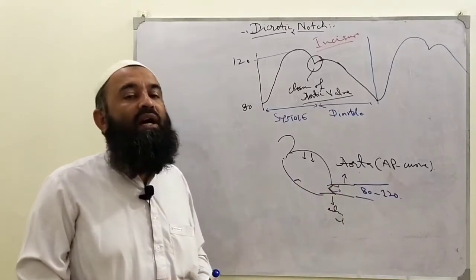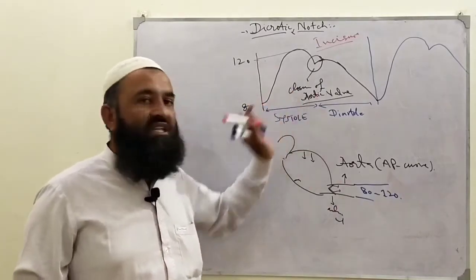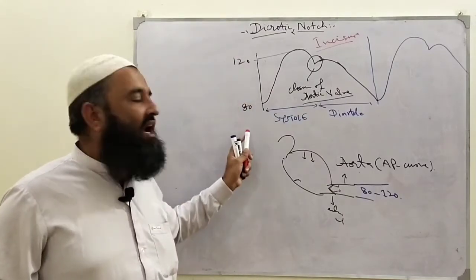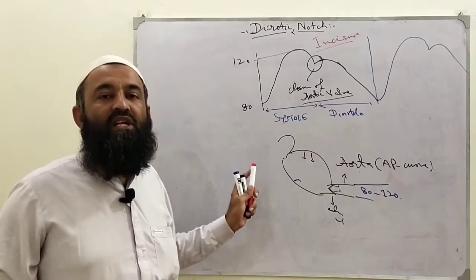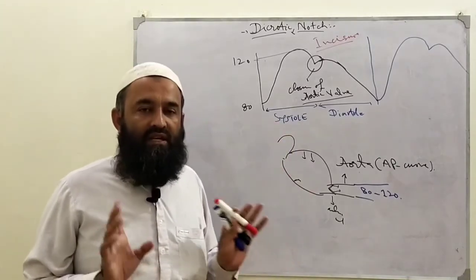As well as if we check the pressure changes in the pulmonary artery, this type of notch will also be seen. But there the pressure will not be these values - these are systemic pressures. If you plot the graph of pulmonary pressure, this notch will also be seen there.